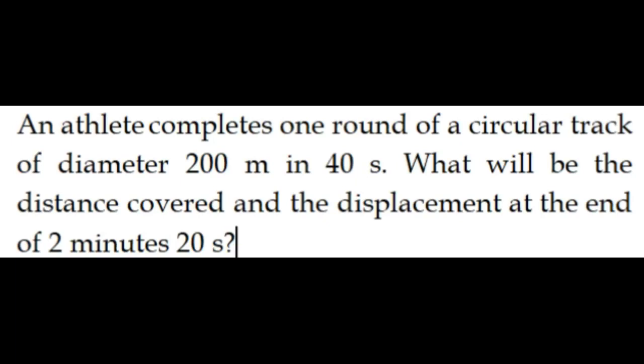An athlete completes one round of a circular track of diameter 200 meters in 40 seconds. What will be the distance covered and displacement at the end of 2 minutes 20 seconds? Distance is the path length covered by the athlete after 2 minutes 20 seconds. Displacement depends on the starting point and the end point — the line connecting them gives the displacement.